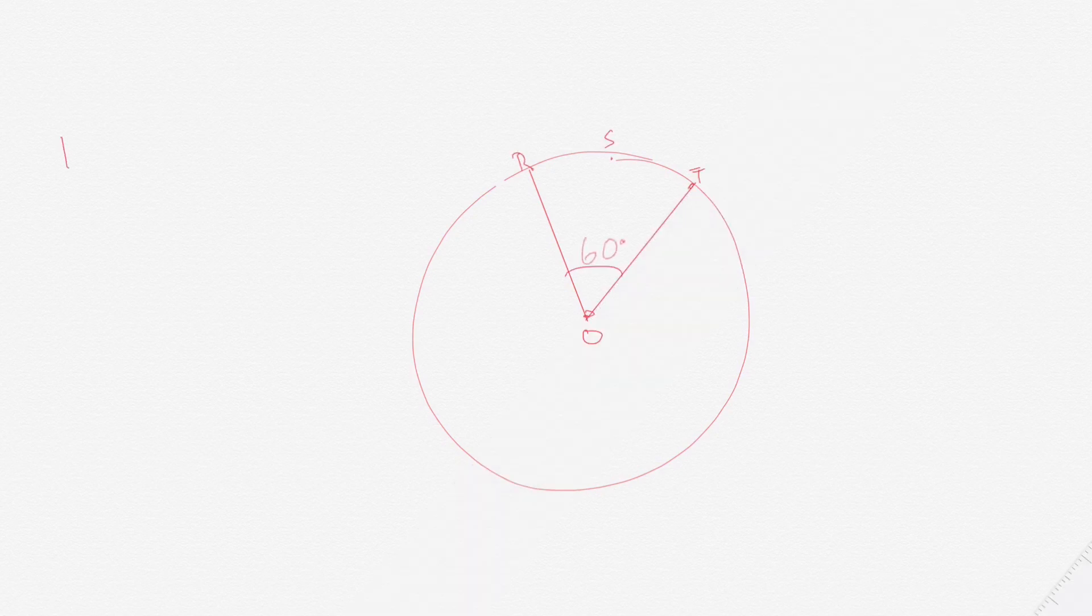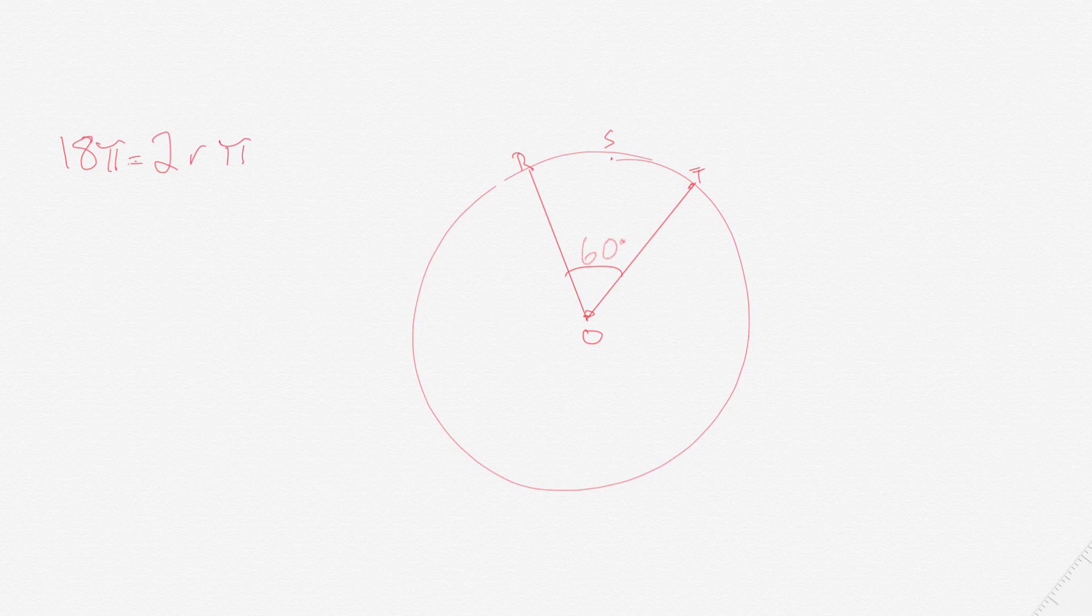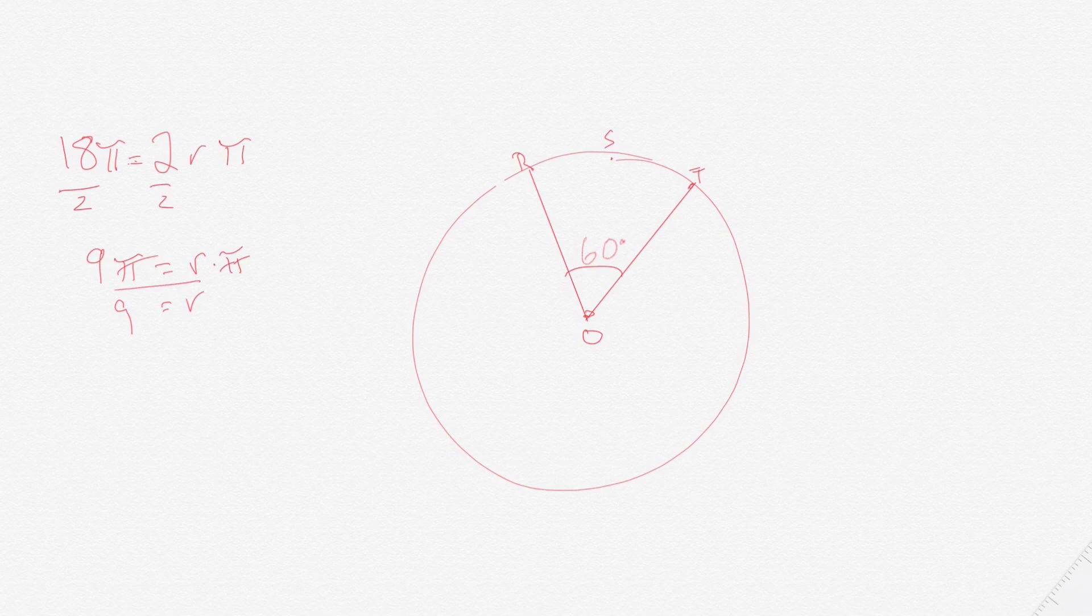If the circumference is 18π, we could find out the radius. The formula is the circumference equals 2 times the radius times π, or 2Rπ. If the circumference is 18π, then we set that equal to 2Rπ. Divide each side by 2, cancel out the π, and we get 9 equals the radius.